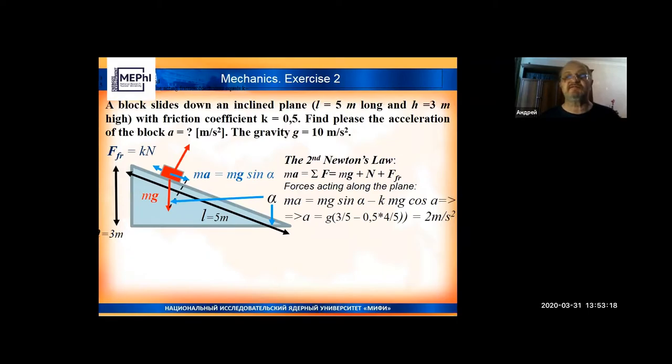Let us consider a bit more difficult exercise, the second one. The same block is sliding down an inclined plane, no bullet, not rolling but sliding with friction. It is losing energy on friction because friction means heating the surfaces. The block is sliding down from the height which is equal to 3 meters and the length of the plane is 5 meters. Using the Pythagorean theorem we may calculate the third side of this triangle, which will be 4 meters.